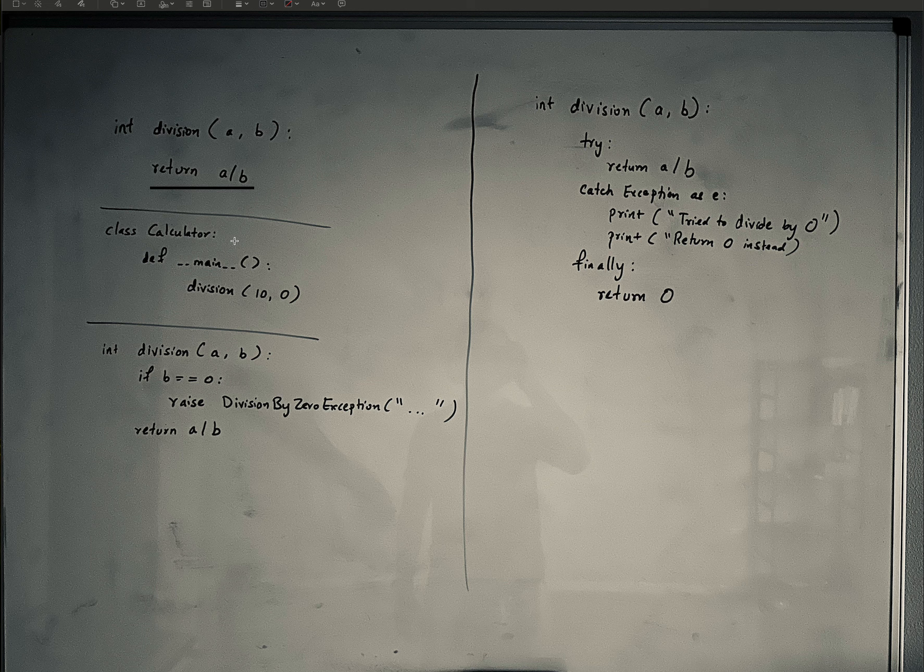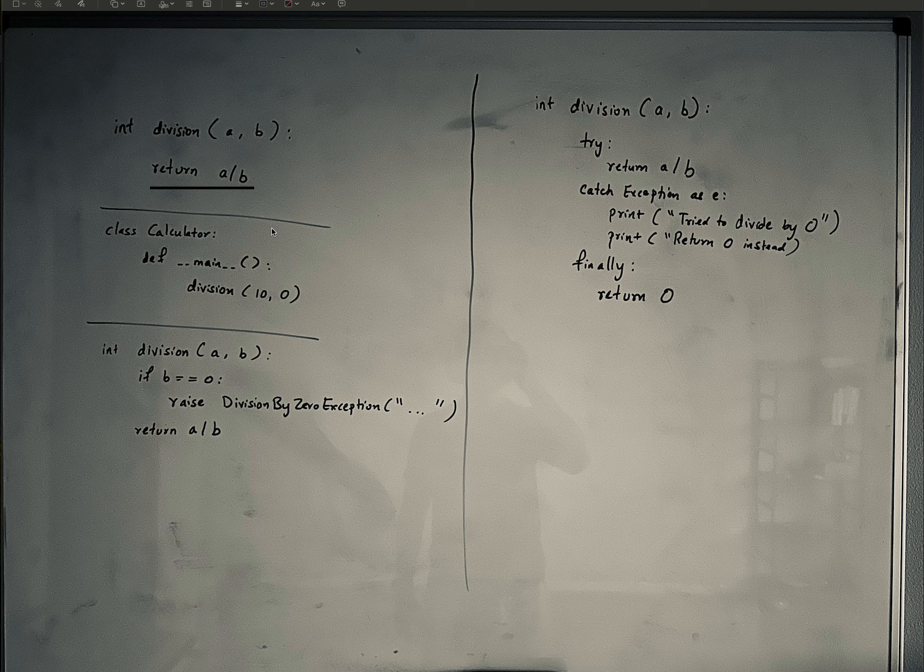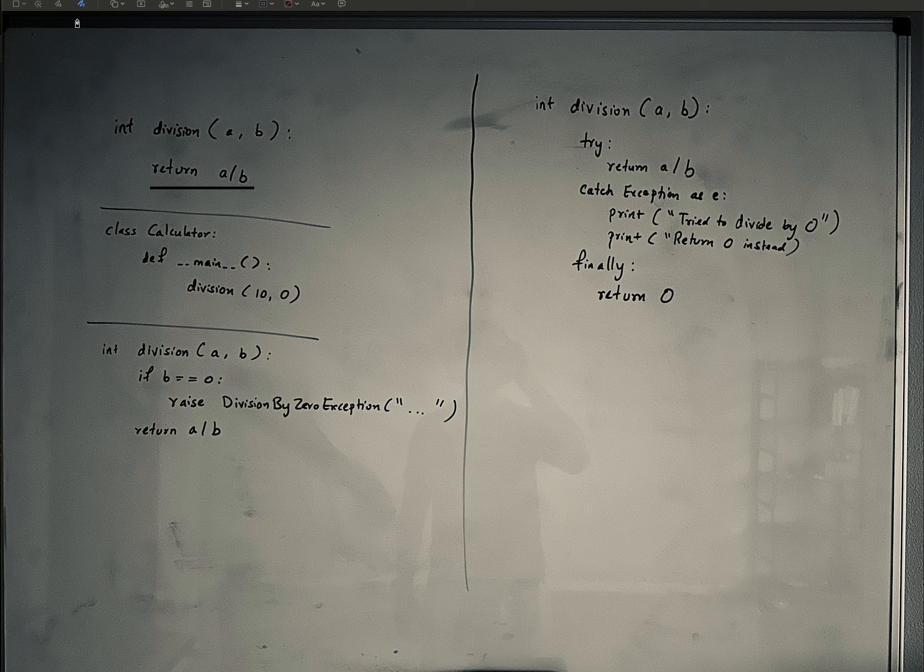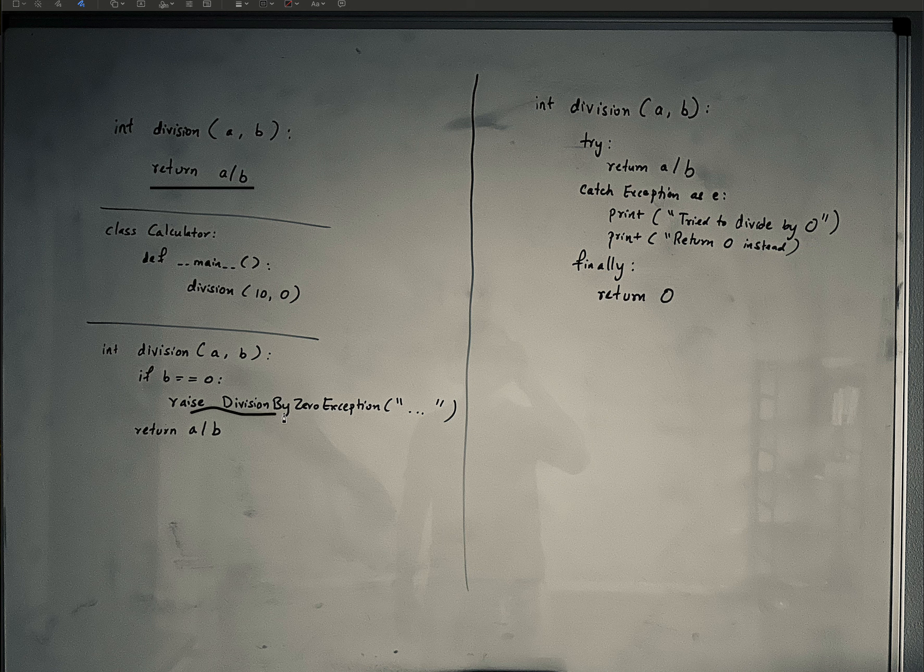But if you want to handle that properly, you don't want your code to just exit. You want it to be more subtle about it. So in that case, what you can do is say if b is equal to zero, then you raise an exception.